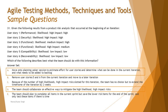The right answers for question 31 are A and D. A: move on to the planning poker session to estimate effort for user stories and determine what can be done in the current iteration and what needs to be added to the backlog. D: the team should collaborate on effective ways to mitigate the high likelihood and high impact risk. This is what a team should do when provided this risk information.